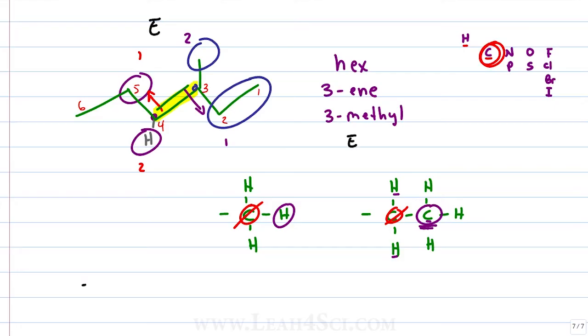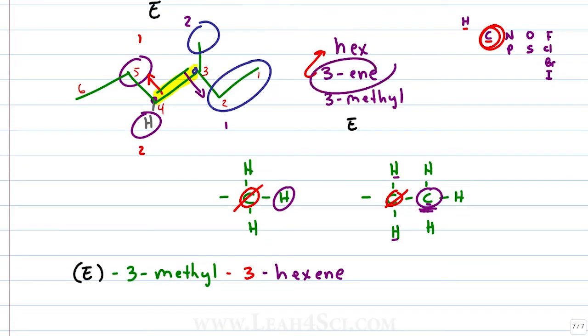Let's put the name together starting with E in parentheses followed by the substituent 3-methyl. Pull the 3 in front of hex giving me 3-hexene for a final name of E-3-methyl-3-hexene. Your professor may choose to leave the 3 where it is. In that case, the name would be E-3-methyl-hex-3-ene. Both are correct.